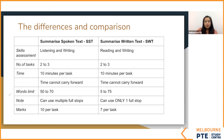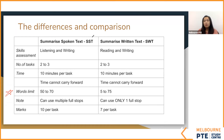In terms of the word limit, this is something I want you to be careful about because lots of students make mistakes — you always mix up. Summarize spoken text: minimum 50, maximum 70. Summarize written text: minimum 5, maximum 75. Don't mix them up. Sometimes you write SST but follow the word limit of SWT. Make sure you remember this properly — take a screenshot and check the similarities and differences between these two.